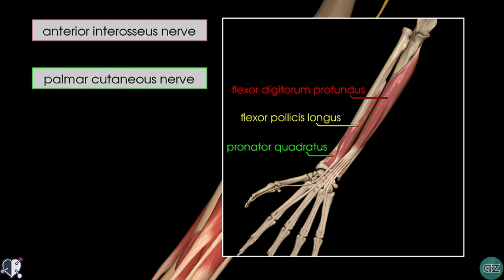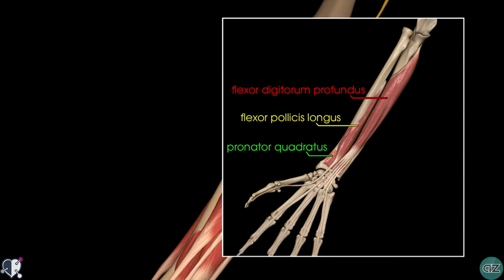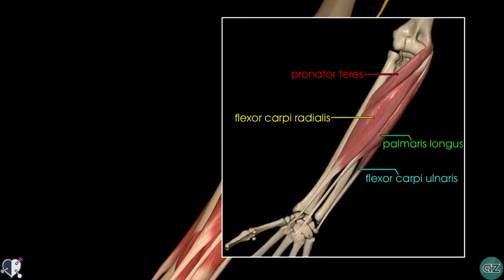The median nerve directly innervates the muscles in the superficial and intermediate layers. In the superficial layer, it provides innervation to the pronator teres, the flexor carpi radialis and the palmaris longus. The flexor carpi ulnaris muscle is innervated by the ulnar nerve. So essentially, the median nerve supplies all the muscles of the anterior compartment of the forearm except the medial half of the flexor digitorum profundus and the flexor carpi ulnaris, which are innervated by the ulnar nerve.